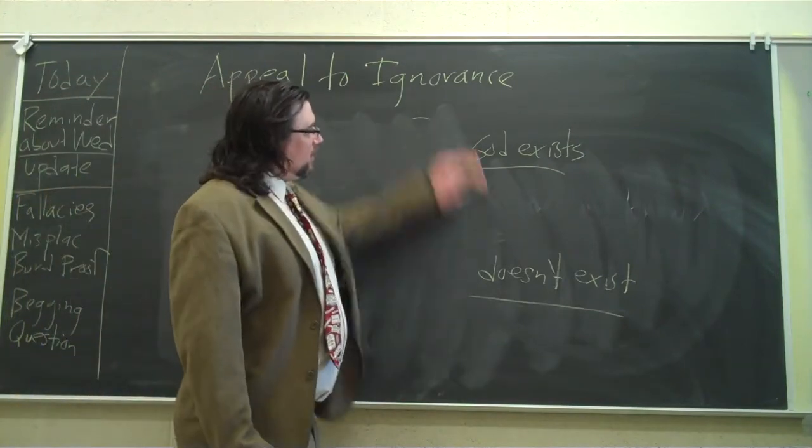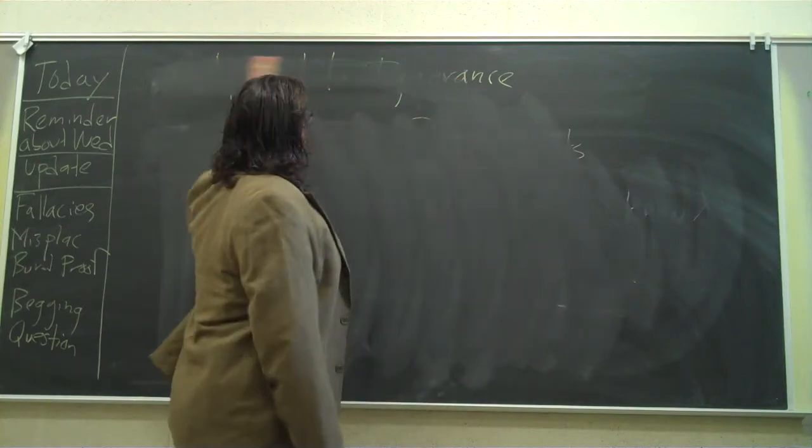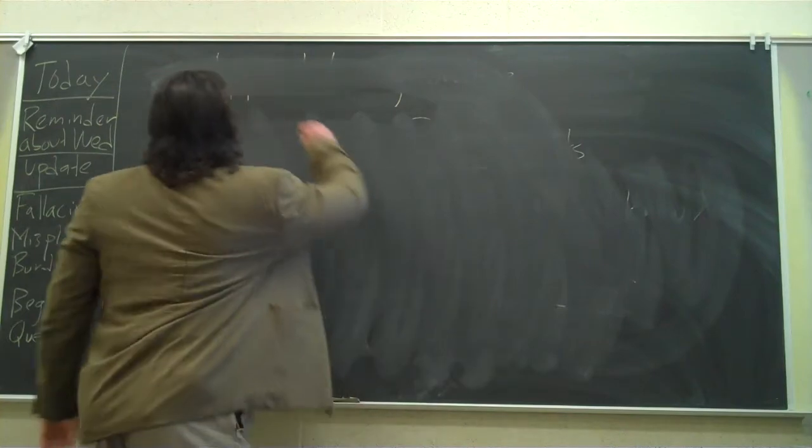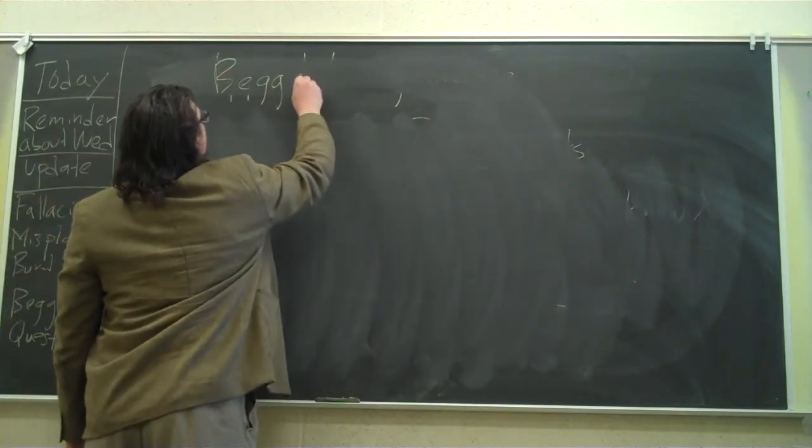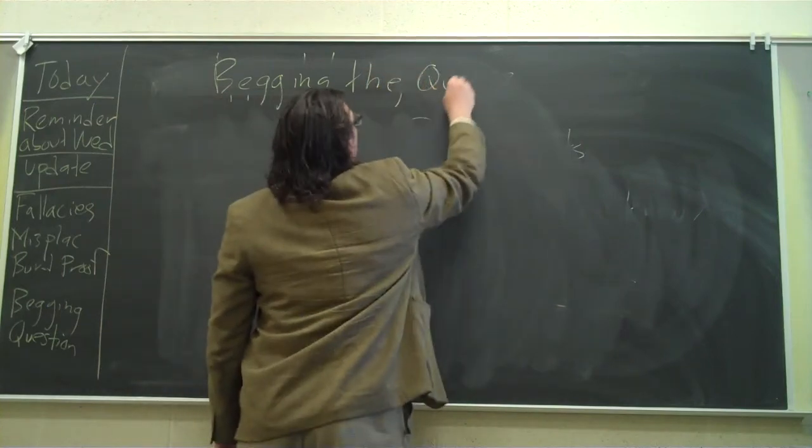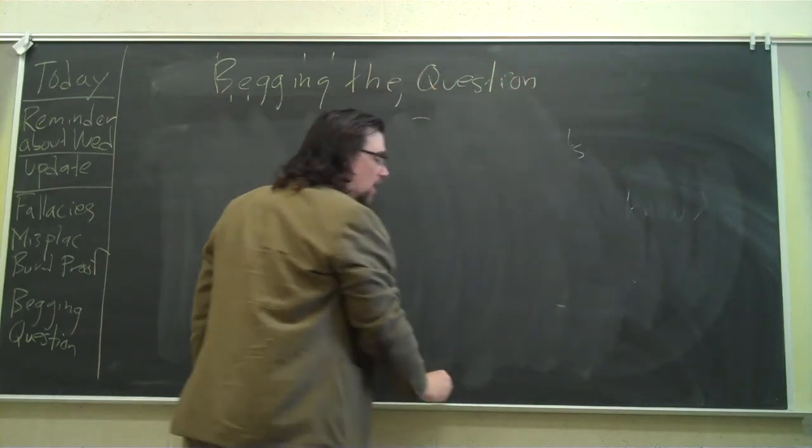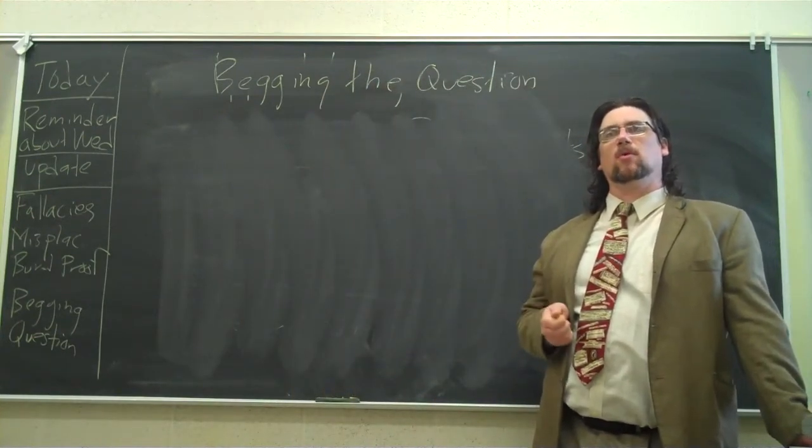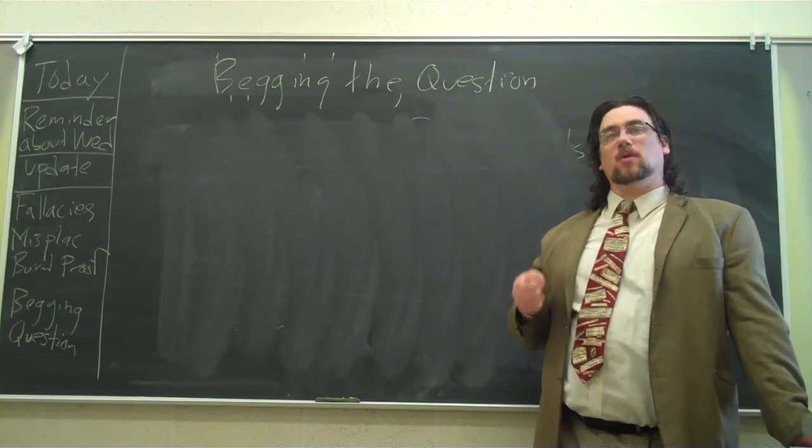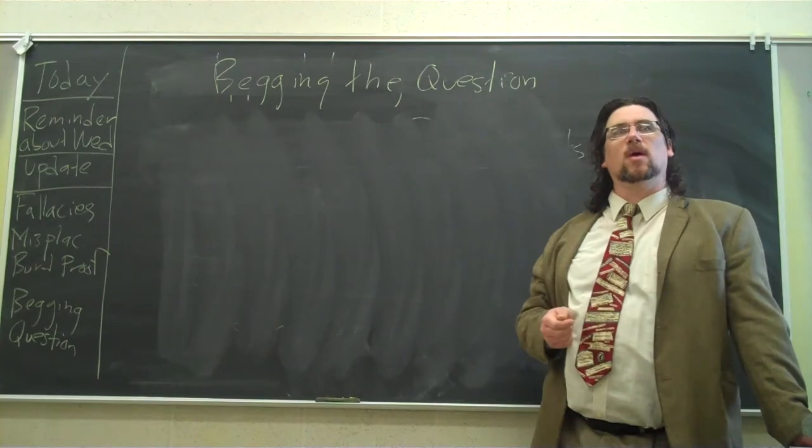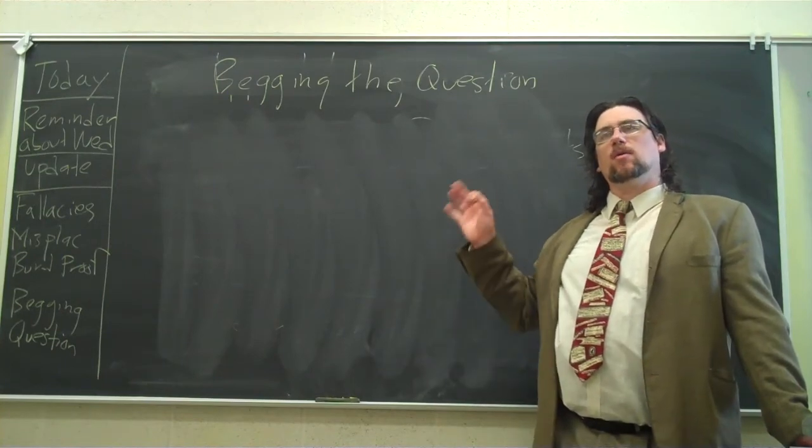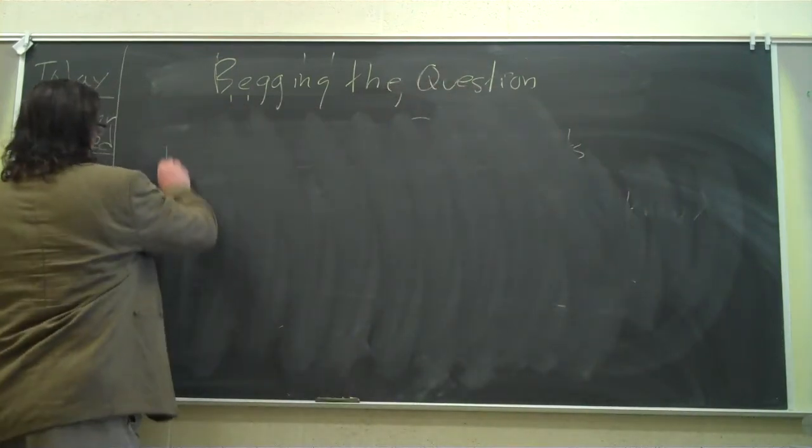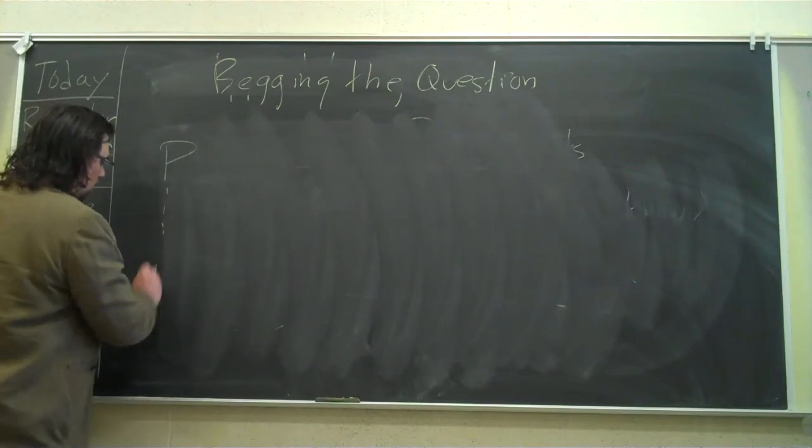Now, the next fallacy is something a little bit different. And this one's called Begging the Question. And like I mentioned, this term, this phrase, gets misused in our contemporary culture. I've seen quite well-educated people misusing this term. When you say that somebody's begging the question, you're referring to a certain structure of the argument. Here's the basic form to it. P, therefore, P.